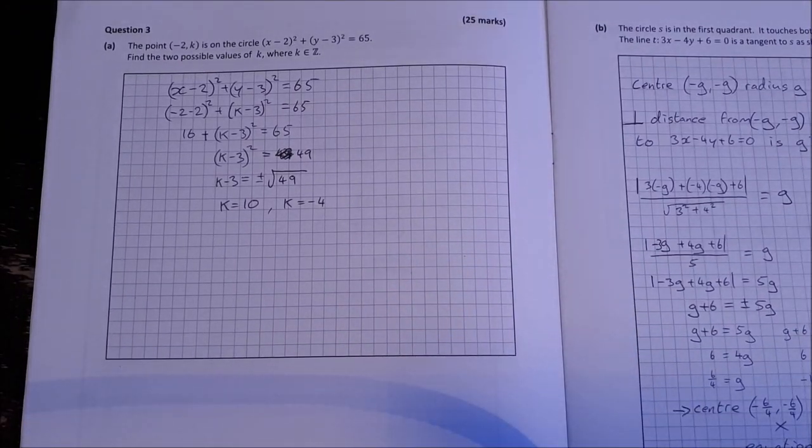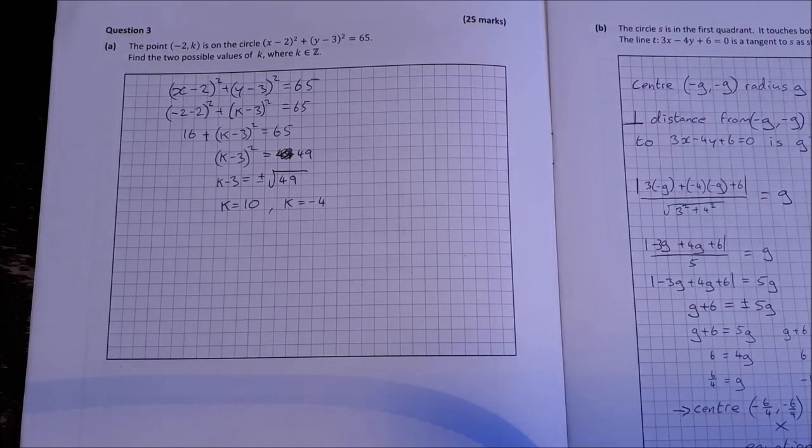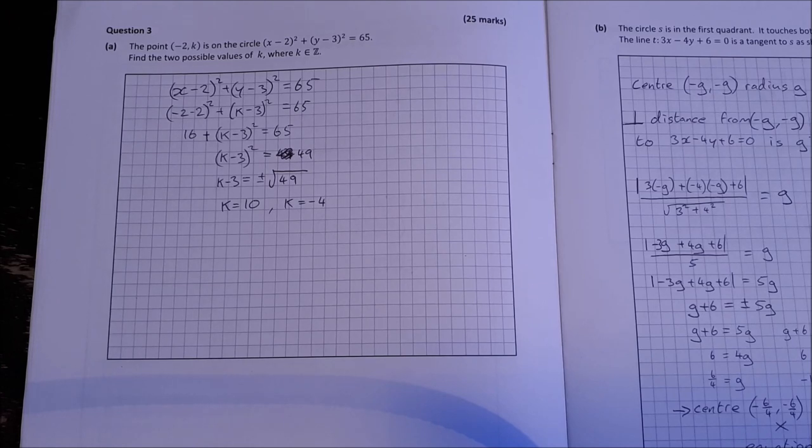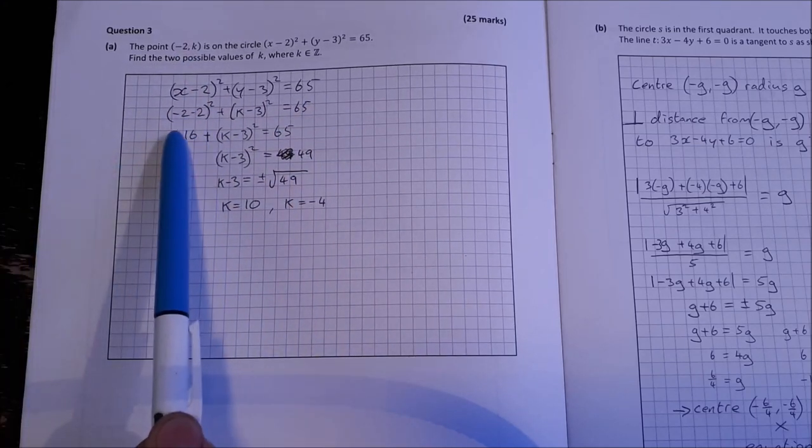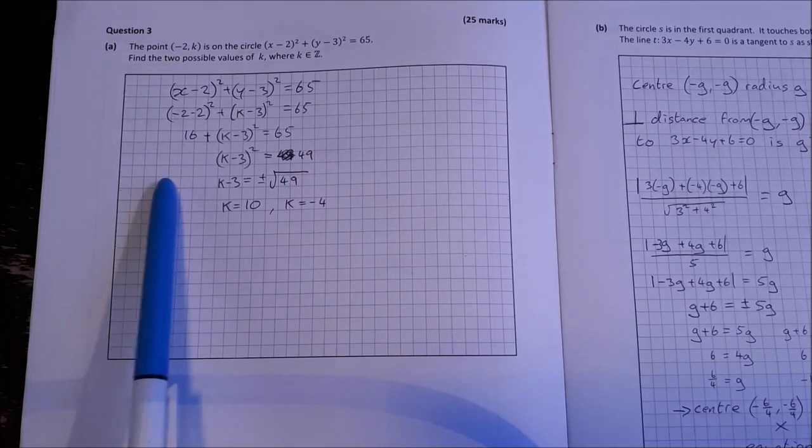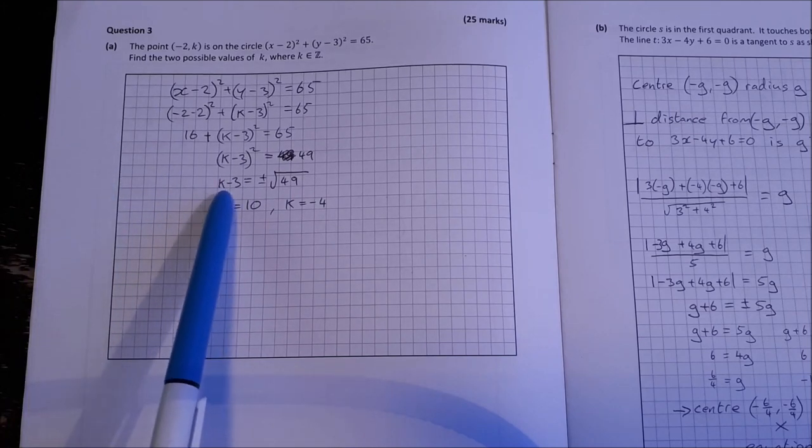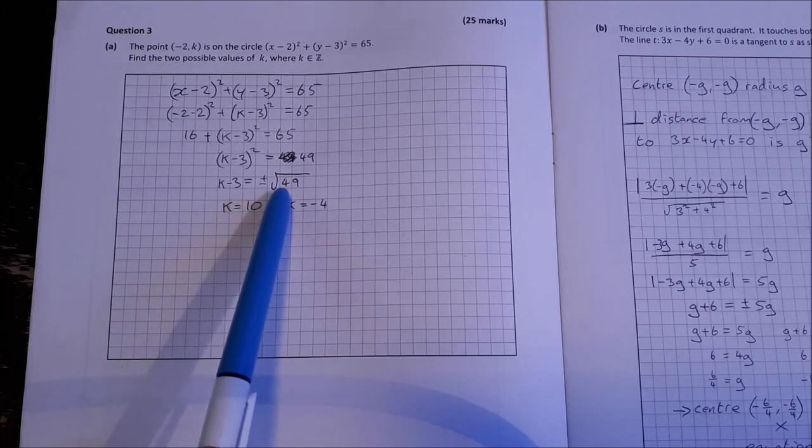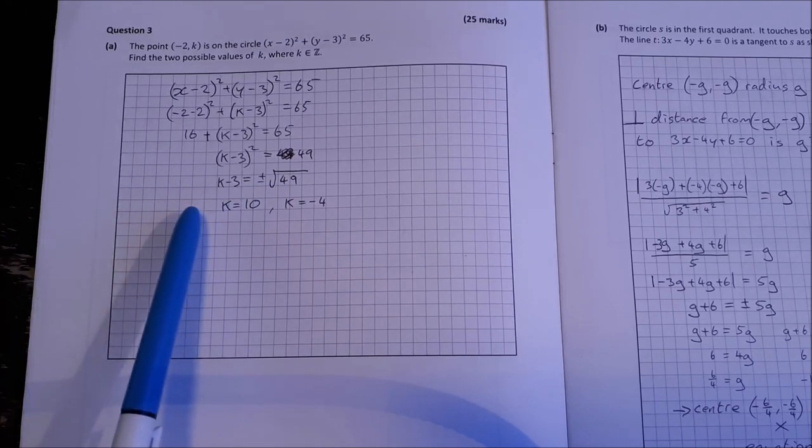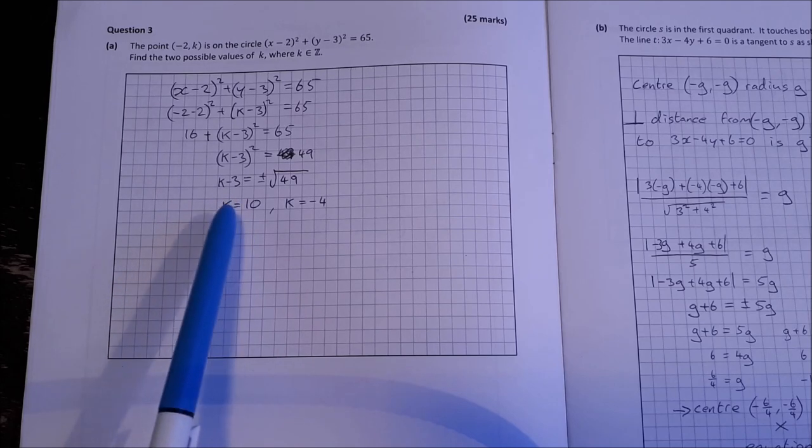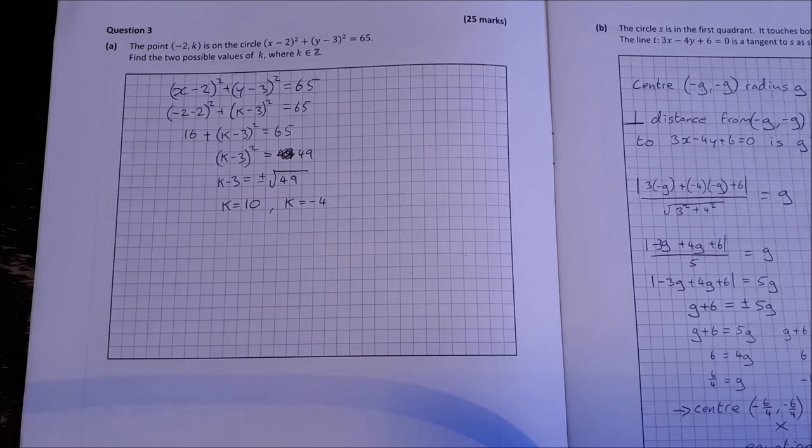Question 3. The point minus 2k is on the circle x minus 2 squared plus y minus 3 squared equal to 65. Find two possible values of K where K is an element of Z, the integers. So we sub in minus 2k into the equation, work it all out and we get this, get down to K minus 3 is equal to plus or minus root 49, root 49 being 7. So K is 7 plus 3 which is 10 or minus 7 plus 3 which is minus 4.